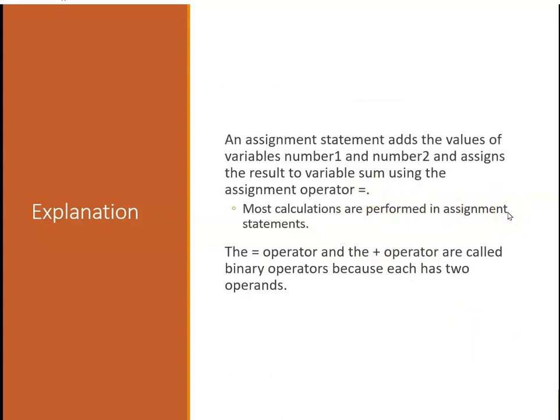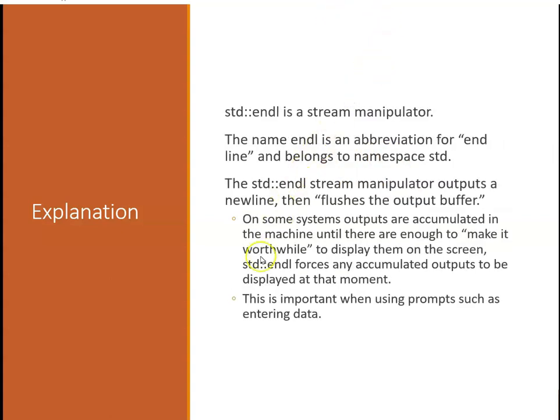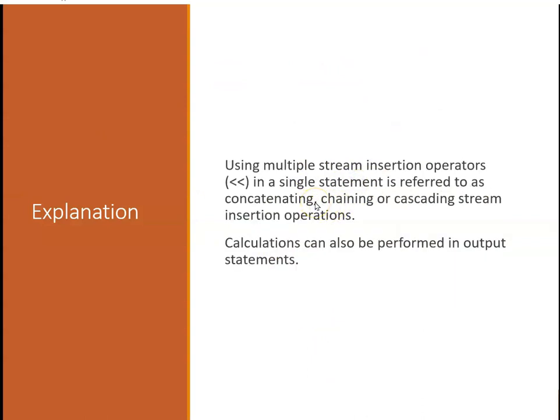An assignment statement, in our example, adds the values of variables number one and number two and assigns the result to variable sum using the assignment operator. Most calculations are performed in assignment statements. The equal operator and plus operator are called binary operators because each one has two operands - a left side and a right side. Endl is what's called a stream manipulator, an abbreviation for endline that belongs to namespace standard. The std endl stream manipulator outputs a new line and then flushes the output buffer. On some systems, outputs are accumulated until there's enough to make it worthwhile to print, and endl will flush the buffer and force them all out. This is important for prompts. You can use multiple stream insertion operators in a single statement - it's referred to as concatenation, chaining, or cascading stream operations. Calculations can also be performed in output statements.